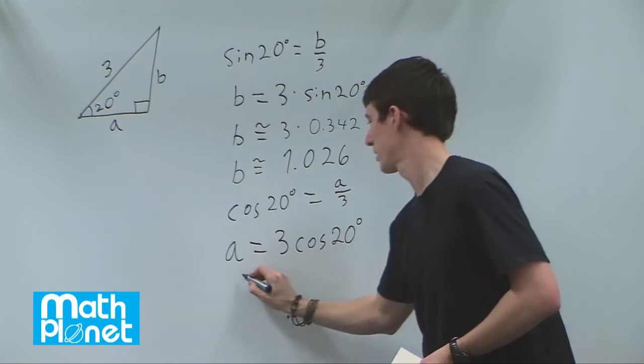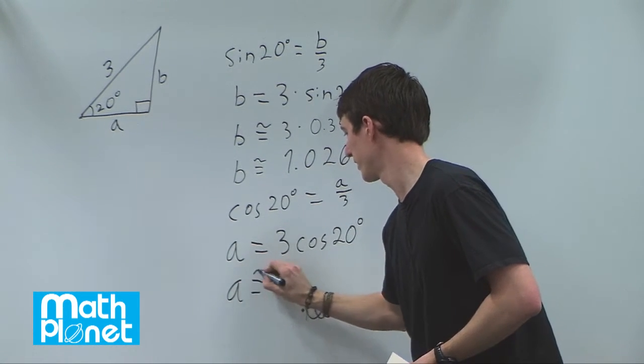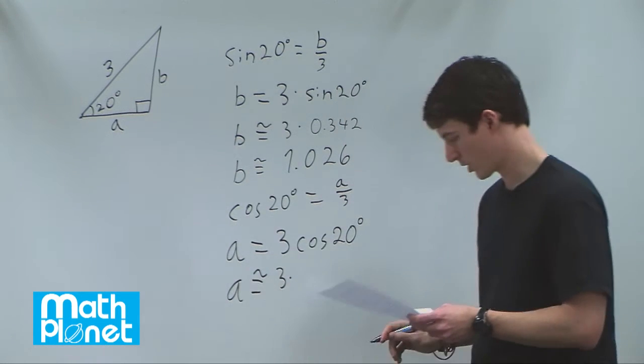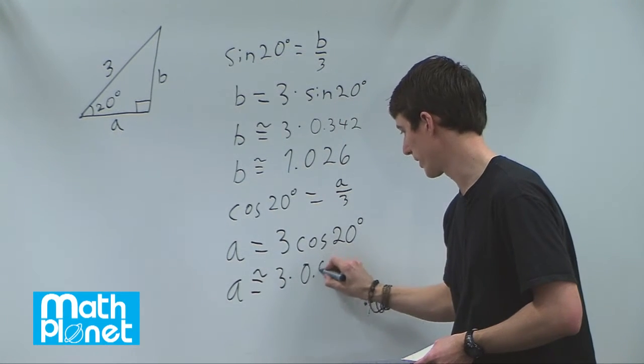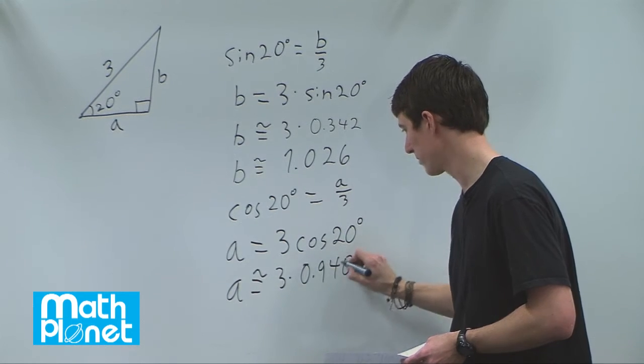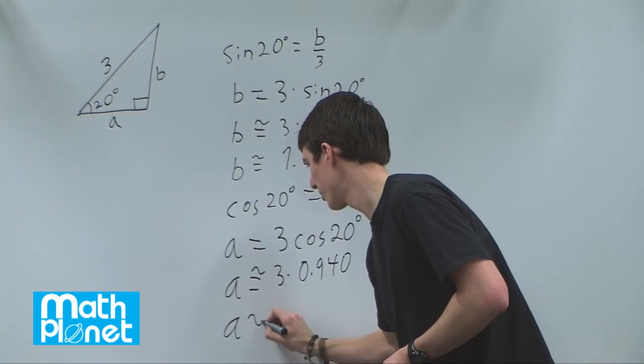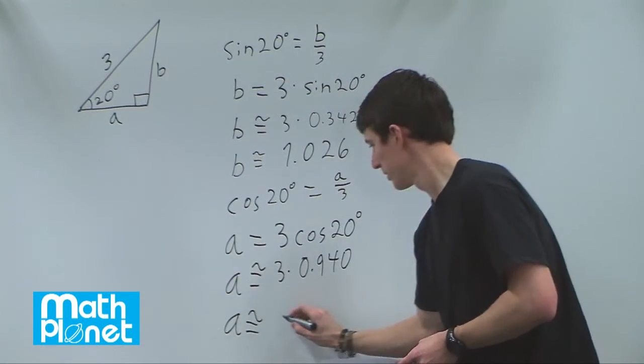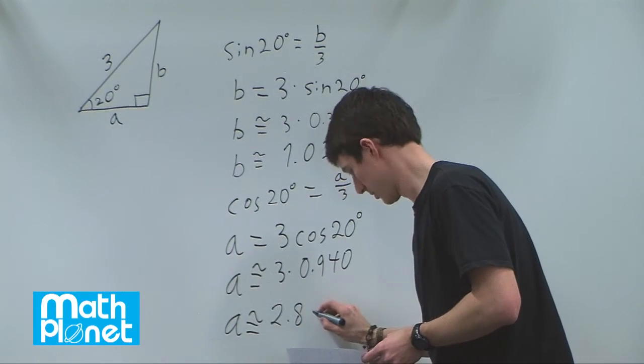So this is approximately equal to 3 times cosine of 20, which is 0.940. So a is approximately equal to 2.820.